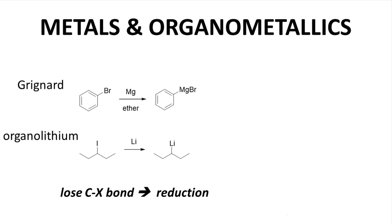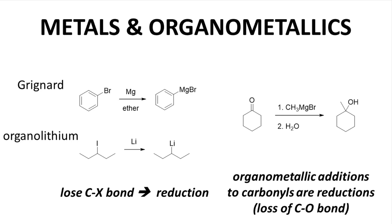Here are some more reductions that involve metals. Anytime one converts a halide into a Grignard reagent — an organomagnesium compound — or an organolithium reagent, a carbon loses a bond to a halogen and is being reduced. Most people would say 'let's make a Grignard reagent' rather than 'let's reduce the carbon with magnesium or lithium,' but these are indeed reductions. Similarly, when organometallics add to a carbonyl, the process is a reduction as the carbon loses a C–O bond. Most people would not often call this a reduction, but formally it is.